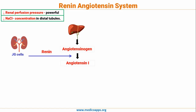The second factor is the load of sodium in the distal tubules. As the concentration of sodium falls in the distal tubule, this is sensed by the macula densa. Once the macula densa senses that the concentration of sodium is less in the distal tubule, it will send a signal back to the JG cells for the production of renin.